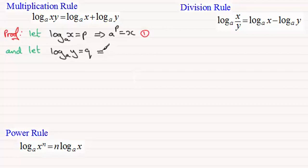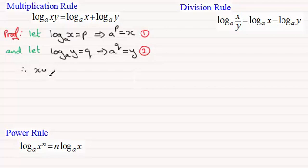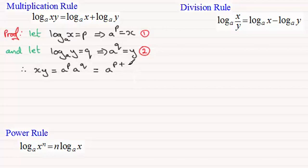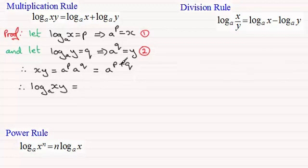Then from this it must follow that a to the power q equals y, and I'll call this result two. Therefore if I multiply x and y together, x times y must equal, from these results, a to the power p multiplied by a to the power q. The rule for indices is to add the powers, so this is exactly the same as a to the power p plus q. Now if I take logs to both sides in base a, then by definition the log of xy in base a must be equal to p plus q.